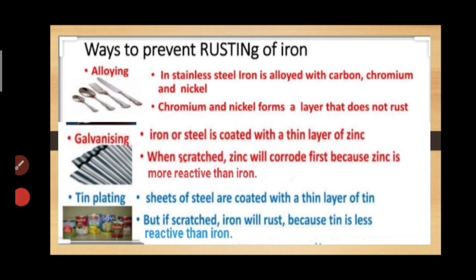Now let's see the methods. First is alloying. In stainless steel, iron is alloyed with carbon, chromium and nickel. Chromium and nickel form a protective layer that doesn't rust. Galvanizing is a process in which iron or steel is coated with a thin layer of zinc. When scratched, zinc will corrode first.